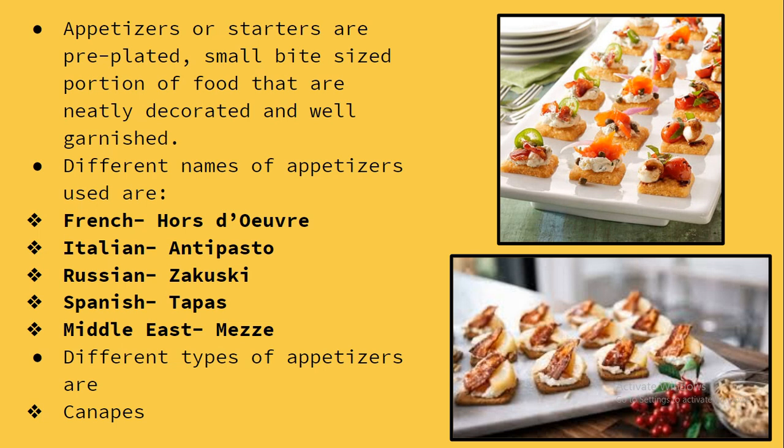Different names of appetizers used around the world: in French, the appetizer is called 'hors d'oeuvre' — note that the spelling is different and it is not pronounced as 'ors' but as 'adov.' In Italian it is called 'antipasto,' in Russian it is known as 'zakuski,' in Spanish it is known as 'tapas,' and in Middle Eastern countries it is known as 'meze.' Those are the different names used by different regions.